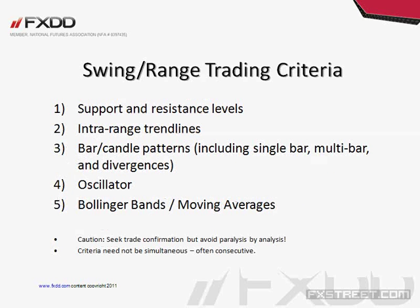Swing and range trading criteria: first and foremost I'm looking for support and resistance levels, whether in a horizontal range or an angled range as an uptrend or downtrend. In a horizontal range I'm looking for both support and resistance. In an uptrending range I'm primarily biased to the upside — so I'm looking more for support. In a downtrending range I'm looking more for resistance to go short. There is a directional bias in angled ranges.